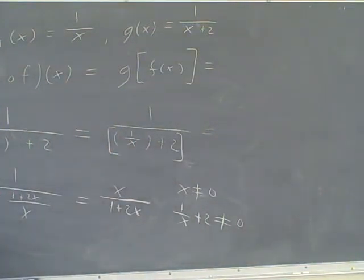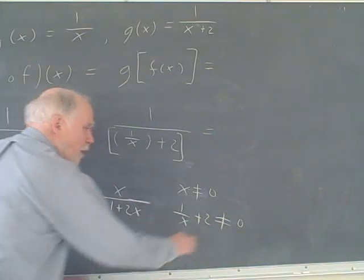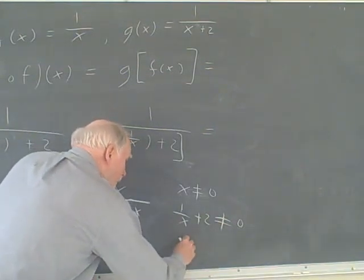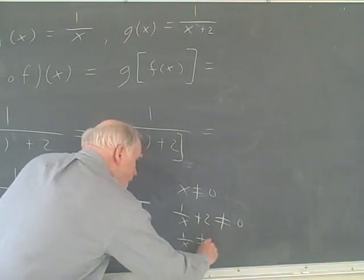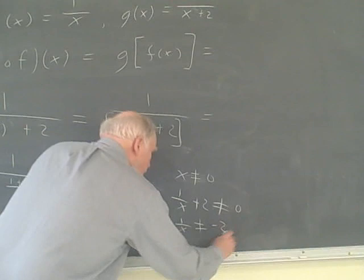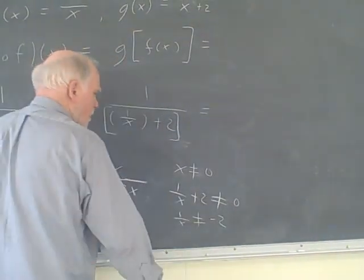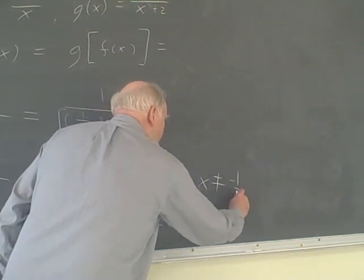The other thing is that this whole quantity can't be 0, so 1 over x plus 2 cannot equal 0. Can it? Now, we can solve this inequality by simply saying 1 over x cannot equal negative 2. And then when we finish solving it, we'll end up with x itself cannot equal negative 1 half.